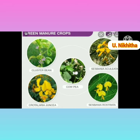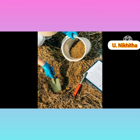Green manure is a cover crop sown on an agricultural plot in order to fertilize the soil, mainly through the intake of nitrogen. Green manure provides improvement in soil structure through its root system and provides a relatively steady supply of stable organic matter.